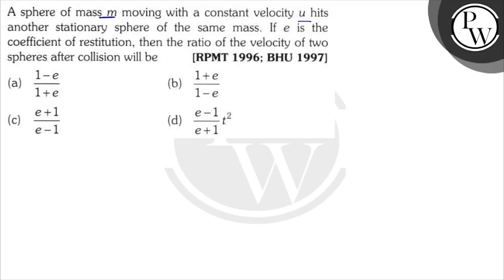So we have here the sphere of mass m moving with the constant velocity u hitting another stationary sphere of the same mass. If e is the coefficient of restitution, then the ratio of the velocities of the two spheres.